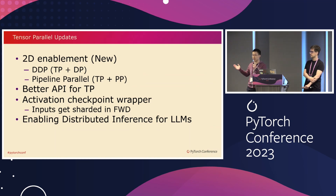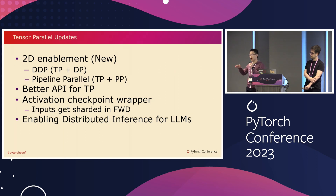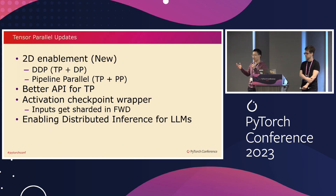we learned some pinpoints for UX and we are doing some improvements to our TP API already, which is available in the nightly build. Thirdly, we enabled the activation checkpoint wrapper for tensor parallel — sometimes the input is the same across TP ranks, so we shard the input after the forward and then all-gather it during recomputation. Last but not least, we are currently working on enabling DTensor-based TP for inference.